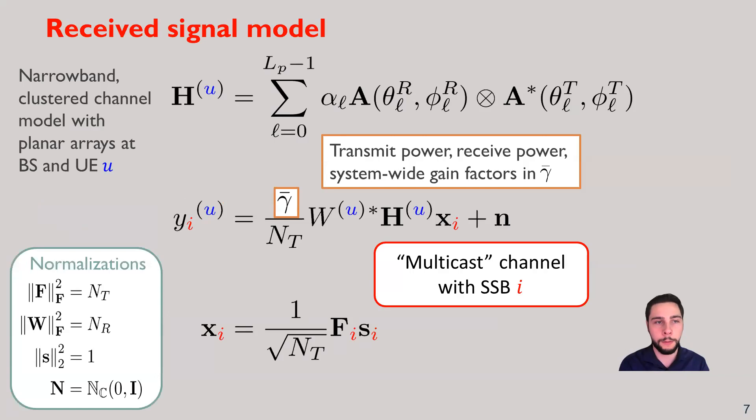First, we start with the received signal model. Here we start with a narrowband clustered channel model with a planar array at both sides. Although this is more of a generalization, we'll actually, in simulation, use a uniform linear array at the receivers or the UEs. And then we conglomerate a number of factors such as transmit power, the gain factors, received powers, all into this gamma bar. The idea here is that not all the channels will have the same power due to being closer or farther from the base station.